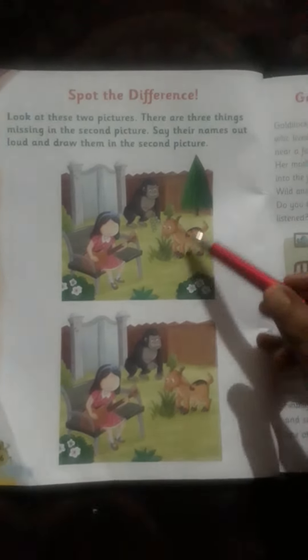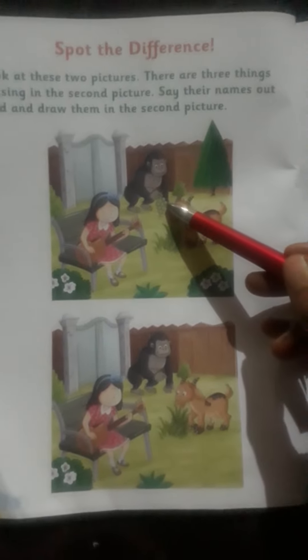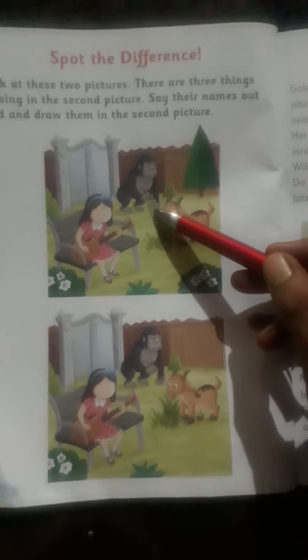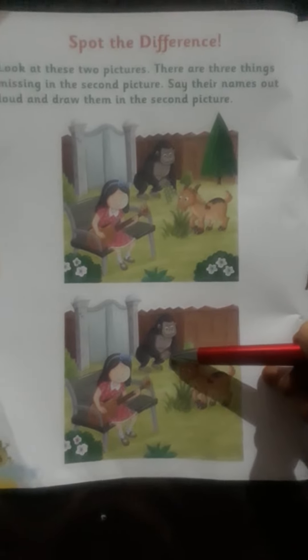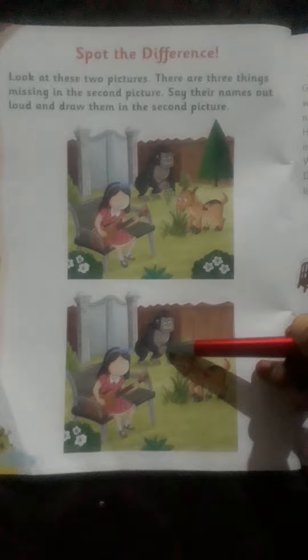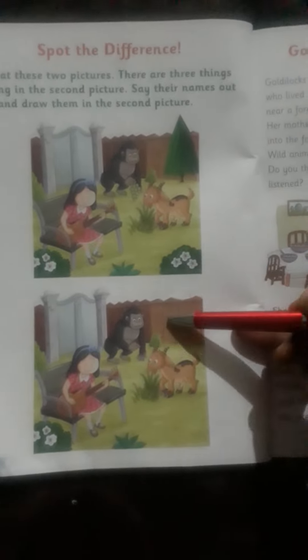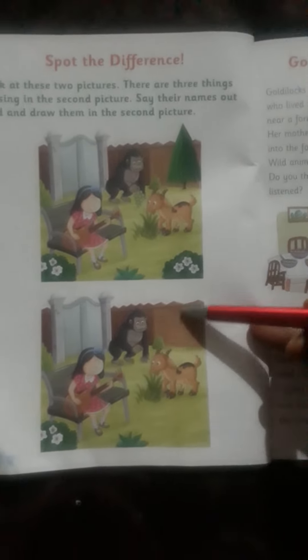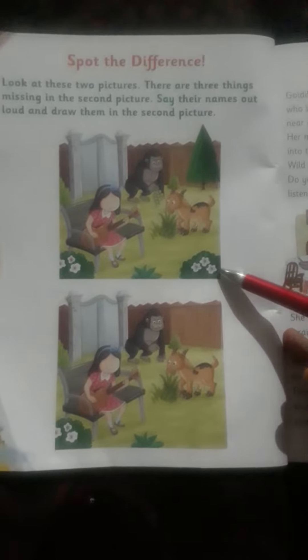You have to compare the first picture with the second picture and see which things are there and which are not. Here in the first picture there are grapes in the hand, but in the second picture there are no grapes — so you have to just draw the grapes, speak loudly 'grapes', and then draw them. Also, there is a tree here but in the second picture there is no tree, so you have to draw the tree.